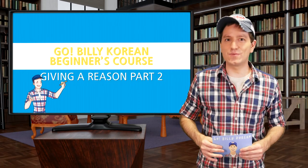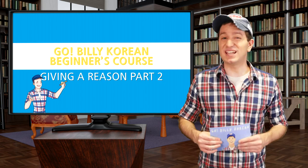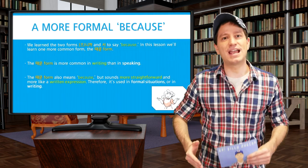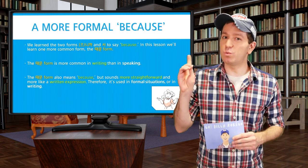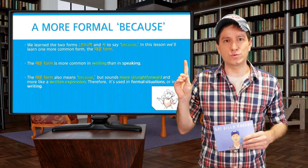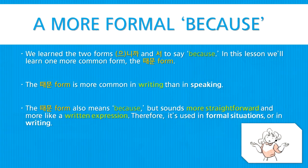Welcome back. In the last lesson we learned two common ways to say 'because': the 니까 form and the 서 form. Well, there is one more form that we can also use which will sound a bit more formal — the 때문 form. The 때문 form is more common in writing than in speaking. This form also means 'because,' however it sounds a bit more straightforward and more like a written expression. Therefore it's used in formal situations or in writing, but is a bit less common when speaking informally.